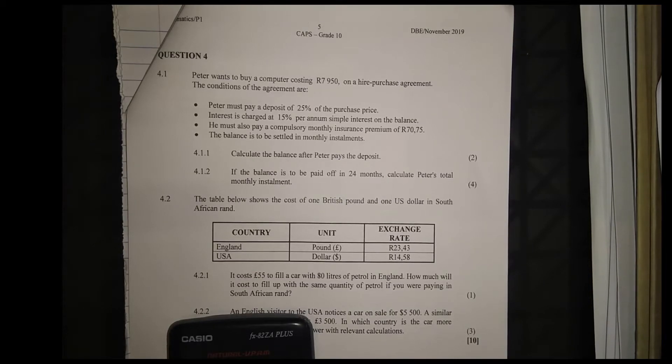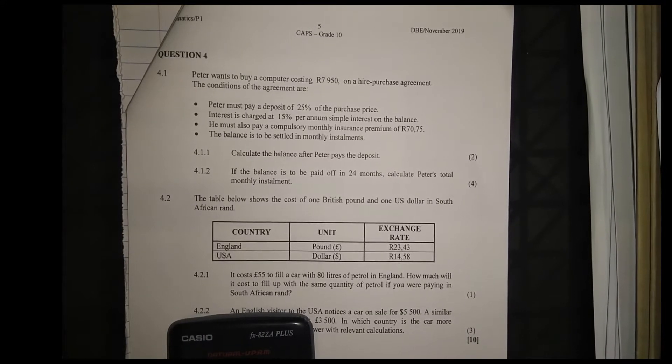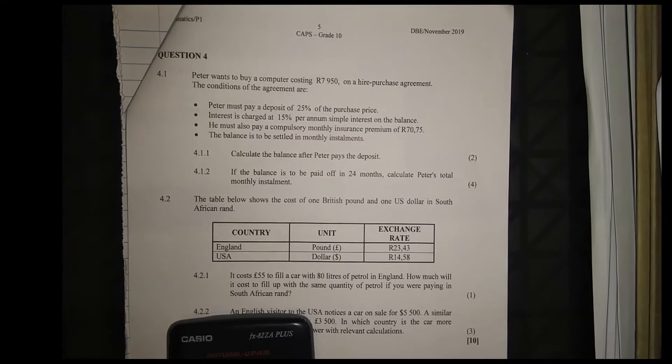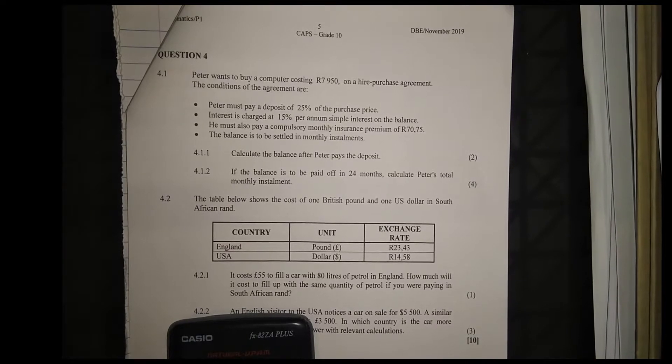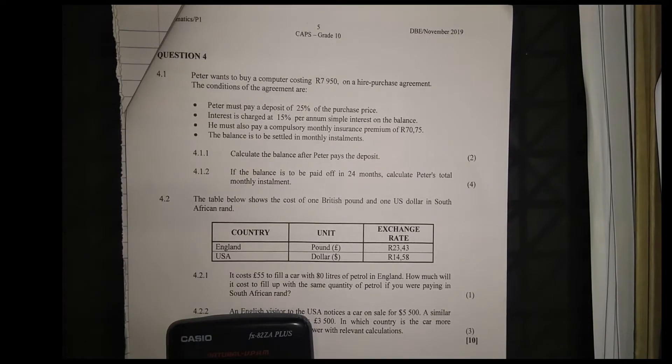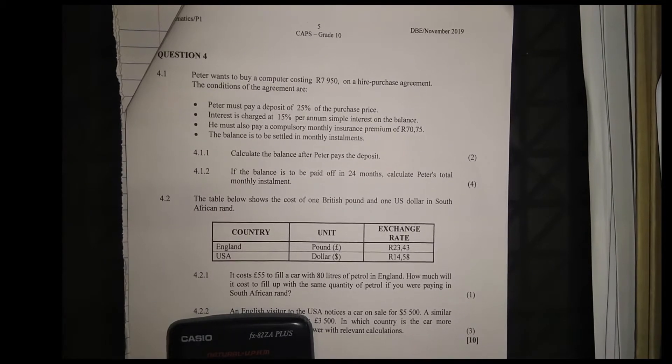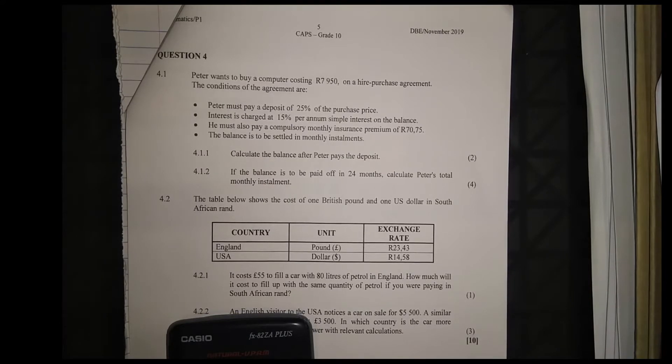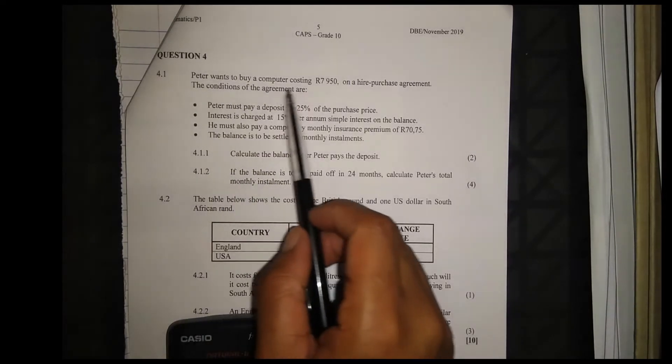Right now, in this video we will discuss Question 4 from the November 2019 Paper 1 Mathematics exam. Question 4 is on financial mathematics. The first question shows a calculator with the simple interest formula on it, so the conditions of the agreement are laid out.